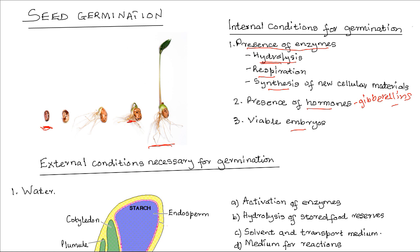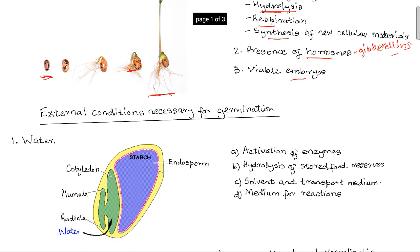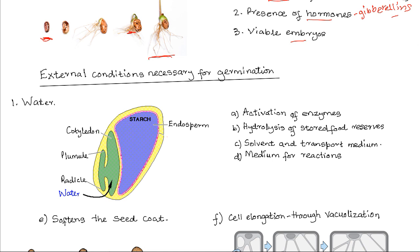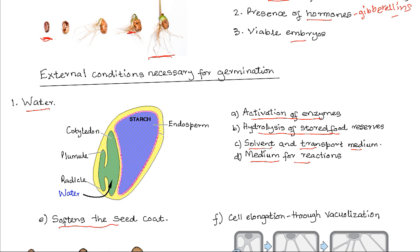There are also external conditions necessary for germination. These include water, which has several roles: activation of enzymes, hydrolysis of stored food reserves (since hydrolysis involves using water to break down complex molecules into simpler ones), acting as a solvent and transport medium for nutrients, and providing the medium in which all biochemical reactions take place. Water also softens the seed coat to allow rupturing and emergence of the radicle.